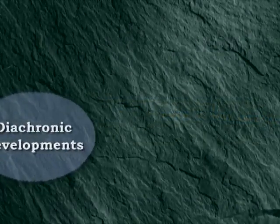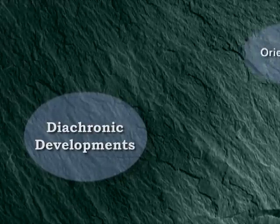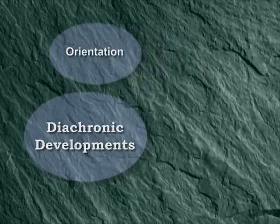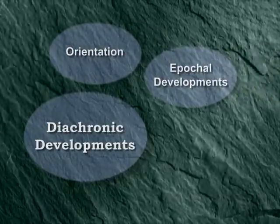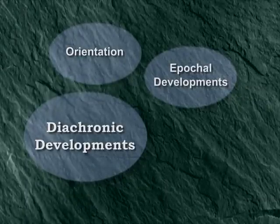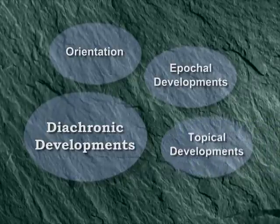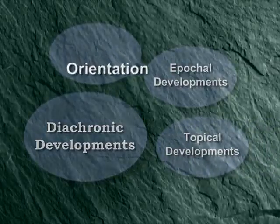To explore this subject, we'll touch on three main issues. First, we'll gain a basic orientation toward diachronic development. Second, we'll explore how diachronic development took place between major historical periods or epochs. And third, we'll look at how specific topics developed over time in the Old Testament. Let's begin with a basic orientation toward diachronic development.